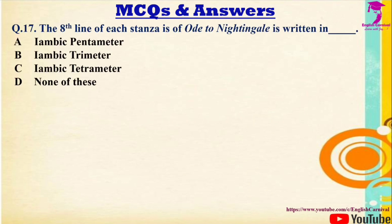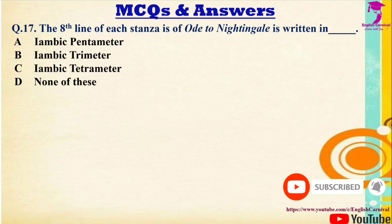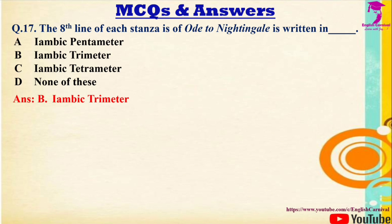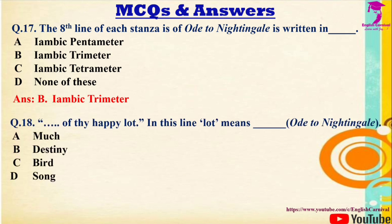Question 17: The eighth line of each stanza of Ode to a Nightingale is written in — Options: A) Iambic Pentameter, B) Iambic Trimeter, C) Iambic Tetrameter, D) None of these. The correct answer is B — Iambic Trimeter.